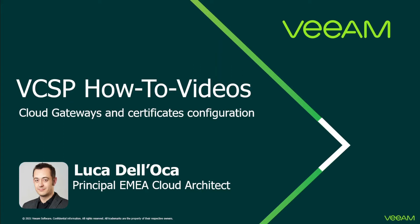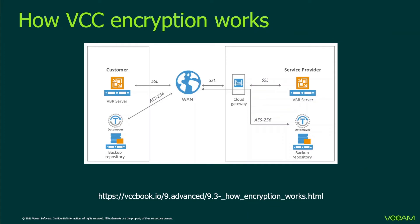In CloudConnect, we use certificates for guaranteeing the encryption, the confidentiality, and ultimately the security of the data that transits between a tenant and the service provider. We use certificates in two main areas. The first is AES-256, used for encrypting data at rest — data stored in a backup repository at the service provider side. We also use SSL for encrypting data in flight, specifically TLS, to encrypt the tunnel stretched between the customer and the service provider. This allows communication over public internet without the need for a dedicated link or VPN configuration.